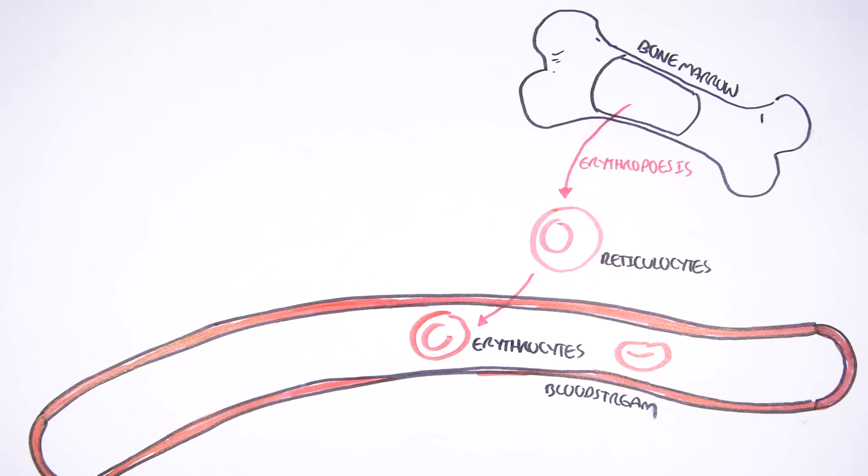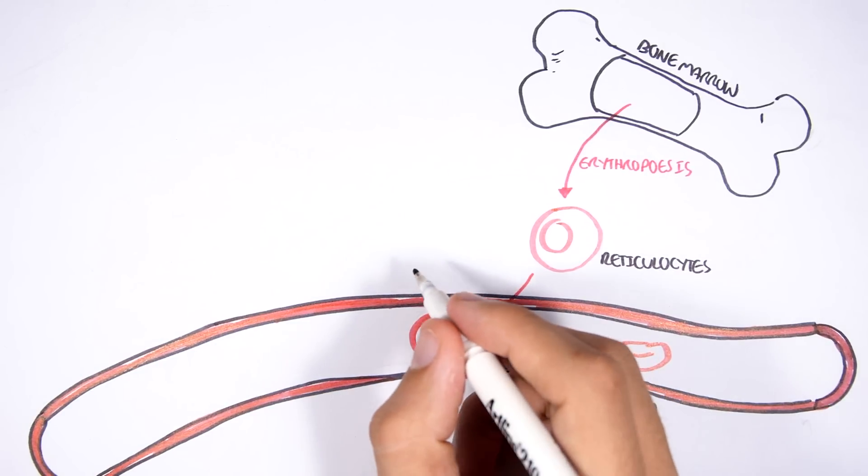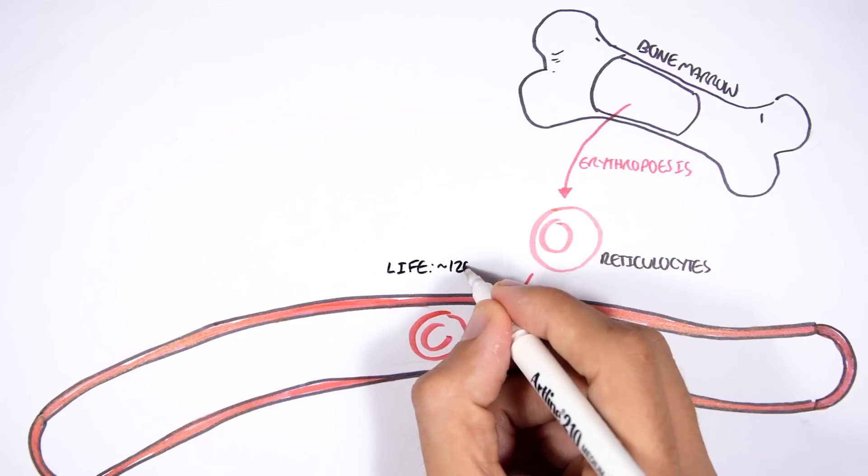These erythrocytes, their purpose is to circulate around our body and carry oxygen around. The oxygen in erythrocytes are bound to what's called hemoglobin. So these erythrocytes, they circulate around the body for about 120 days until they eventually get old.